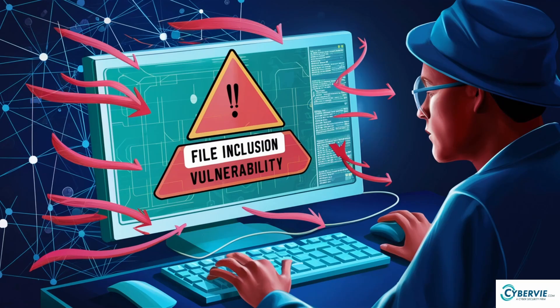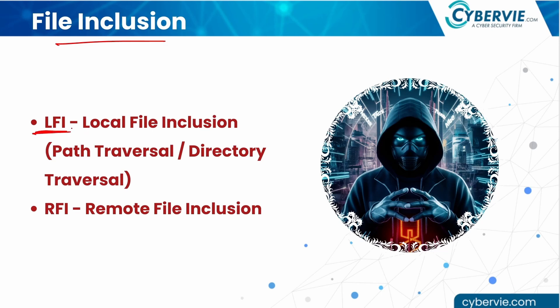File inclusion vulnerabilities are of two types: LFI (local file inclusion) and RFI (remote file inclusion). LFI is also known as path traversal vulnerability and directory traversal vulnerability. Don't confuse directory traversal with directory listing — directory listing is a separate vulnerability. Directory traversal, path traversal, or local file inclusion is a high severity vulnerability.